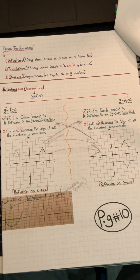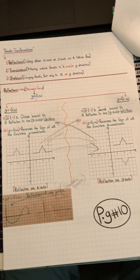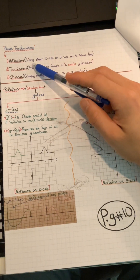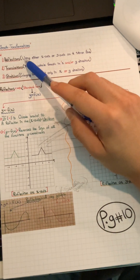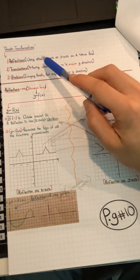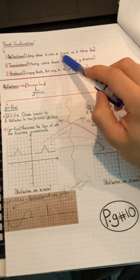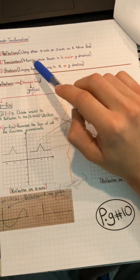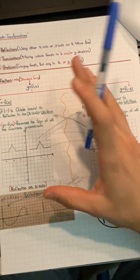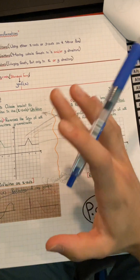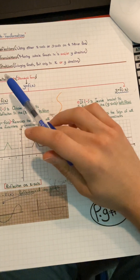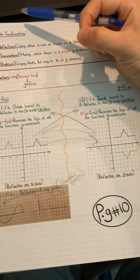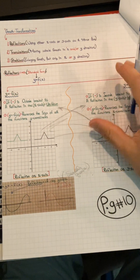Now let's look at graph transformations. We have reflections, translations, and stretches. Reflections use either the x-axis or y-axis as a mirror line. Translation moves the whole graph in the x or y direction. Stretches enlarge the graph only in the x-direction or only in the y-direction.